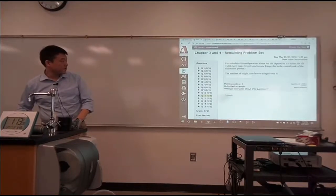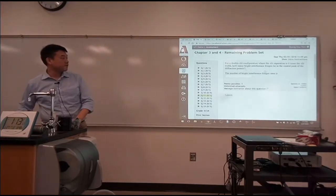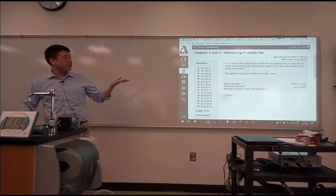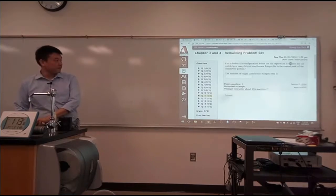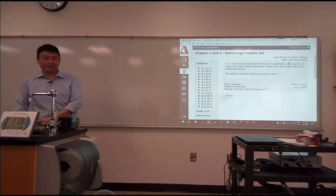All right, for a double slit configuration where the slit separation is four times the slit width, how many bright interference fringes lie? This is, by the way, randomly generated, so it'll change depending on who's doing it.